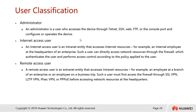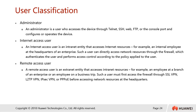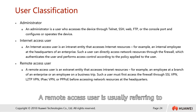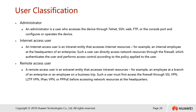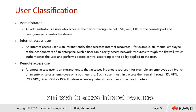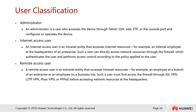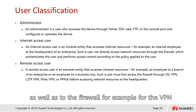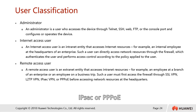For internet access users, it refers to the user group that has basic permissions for network access. A remote access user refers to any user that is not inside the intranet and wishes to access intranet resources using technology such as VPNs. The VPN is established between the user on the public network and the firewall. Examples of VPN include SSL, Layer 2 Tunneling Protocol (L2TP), IPSec, and PPPoE.